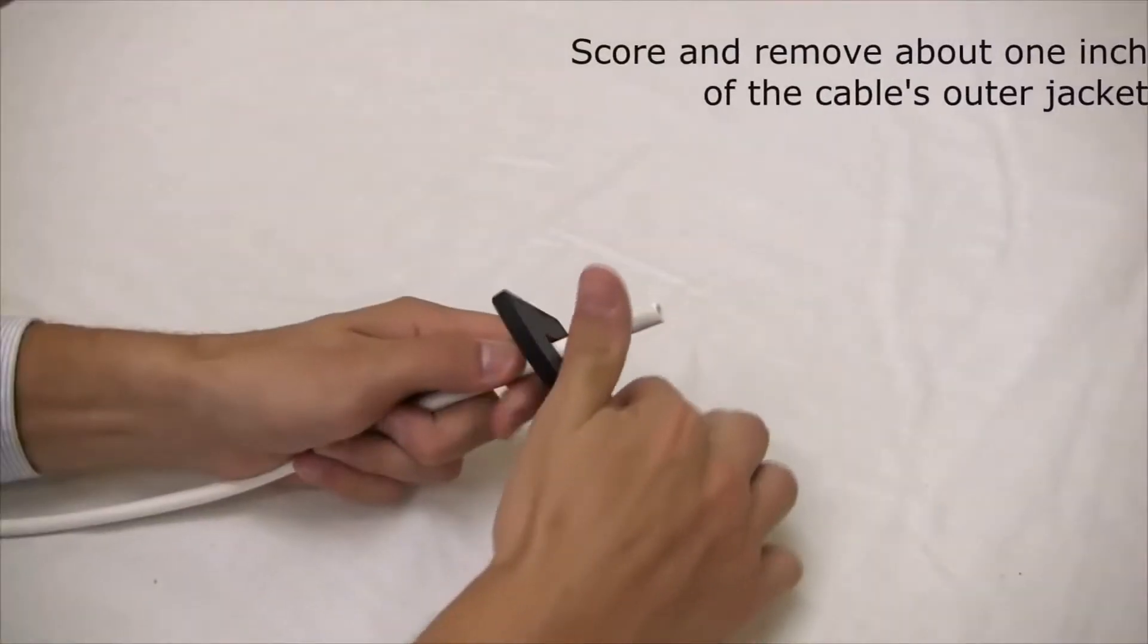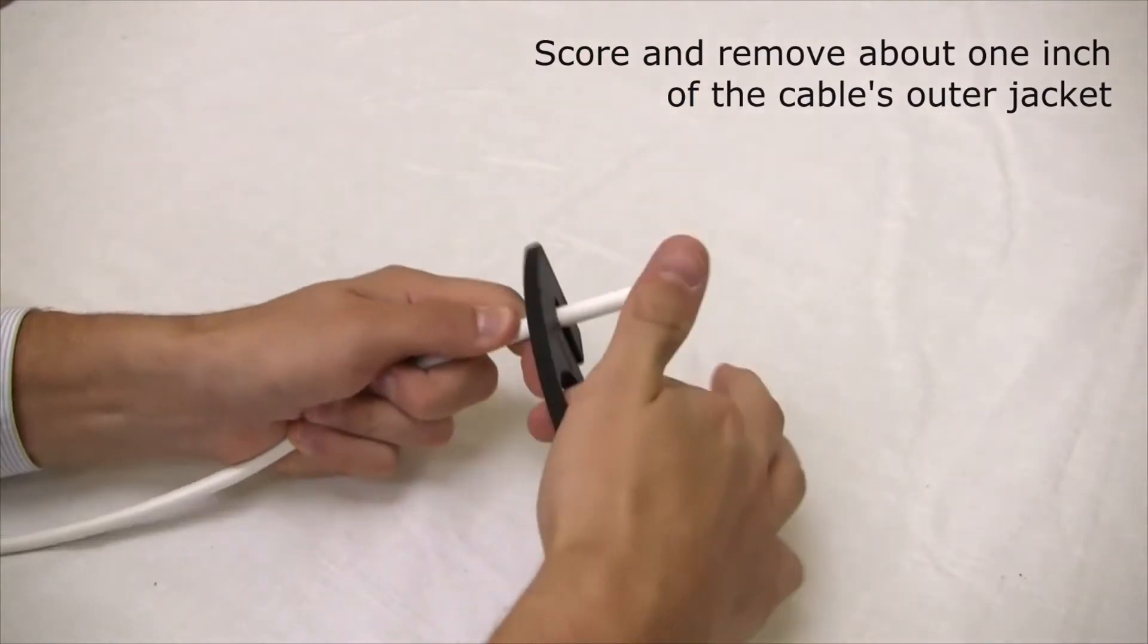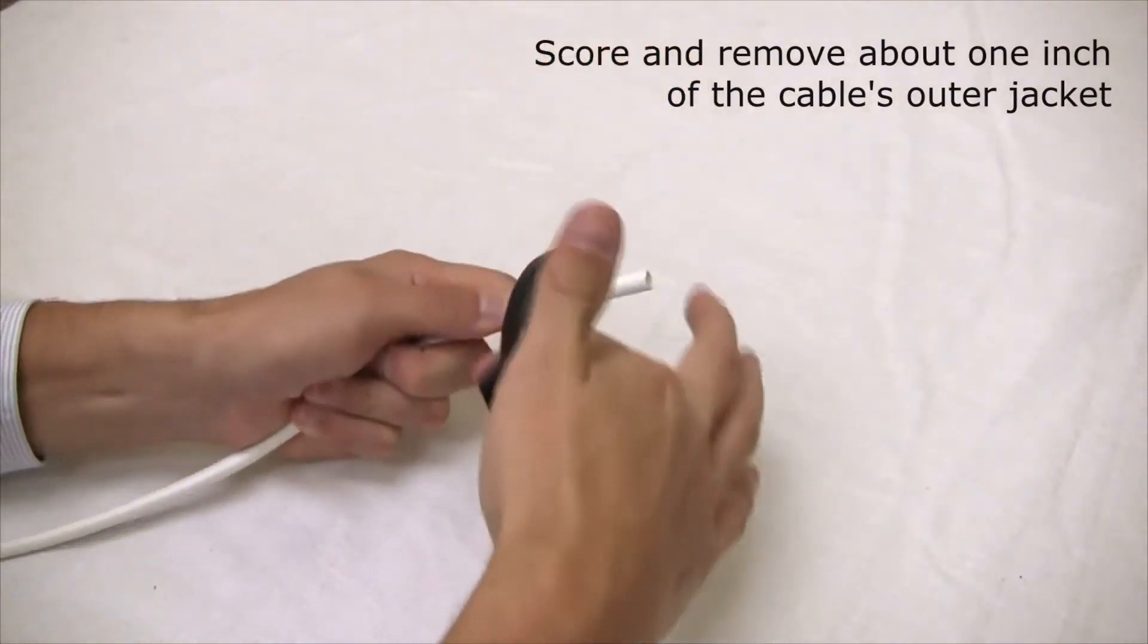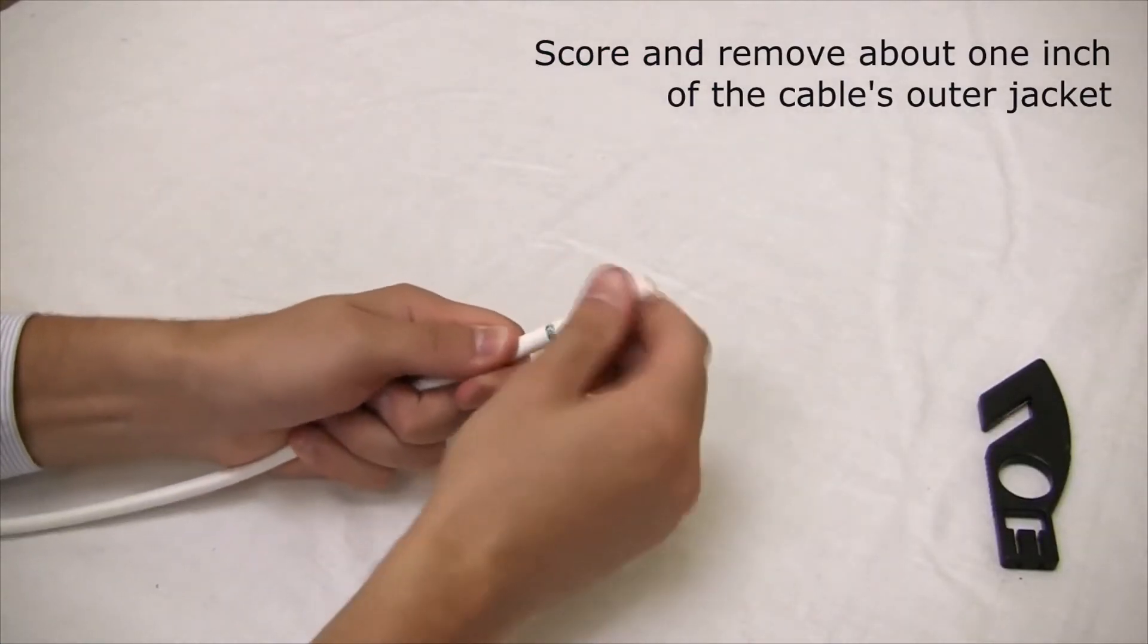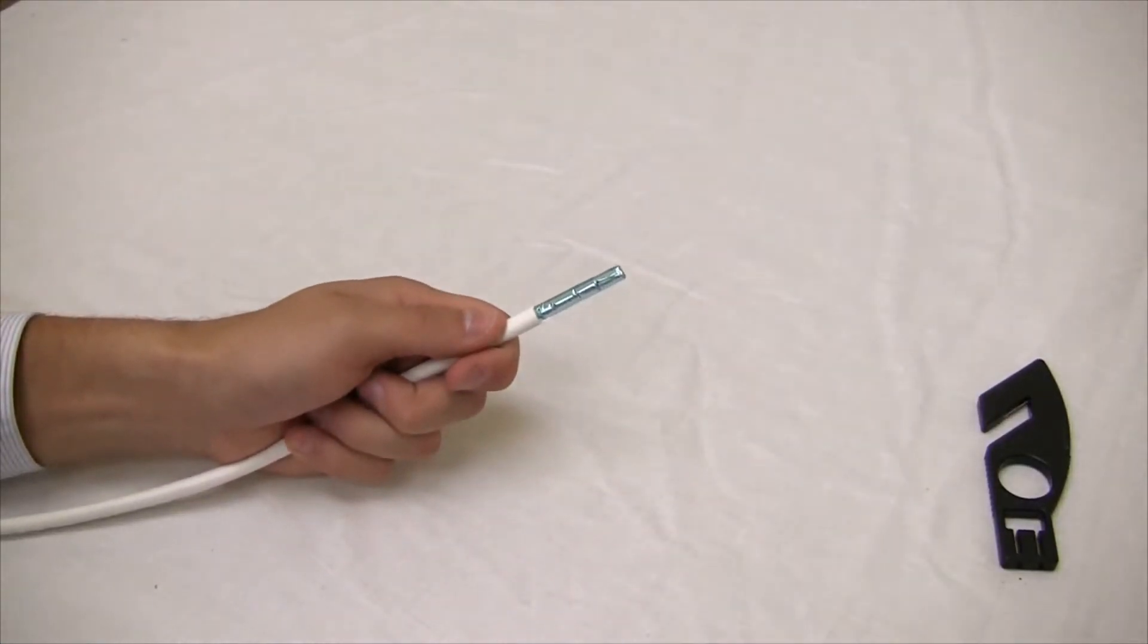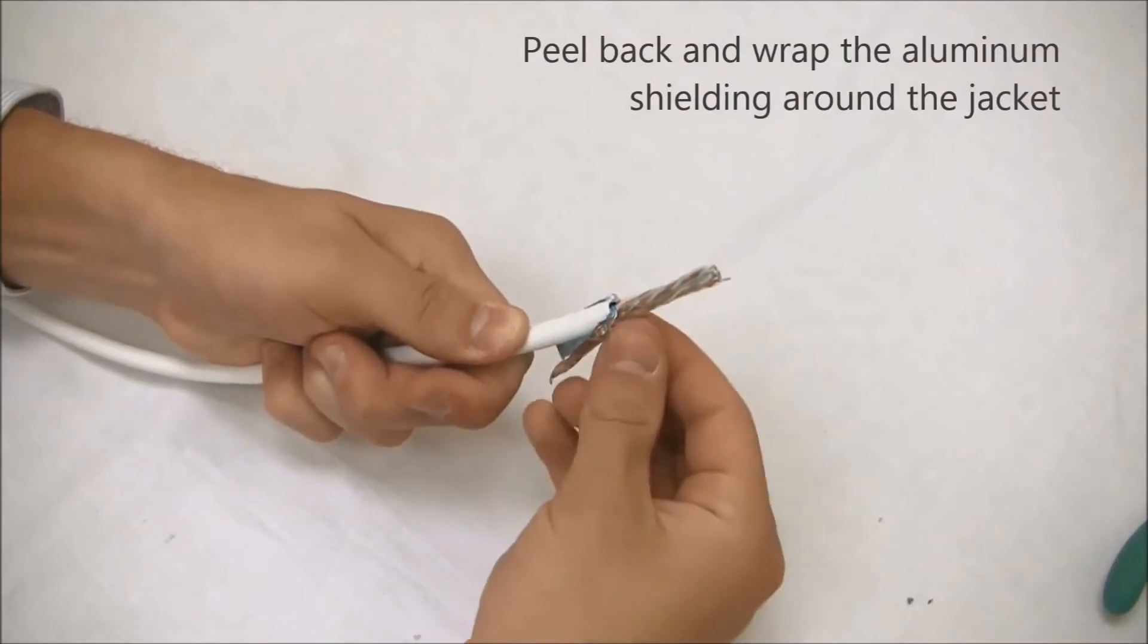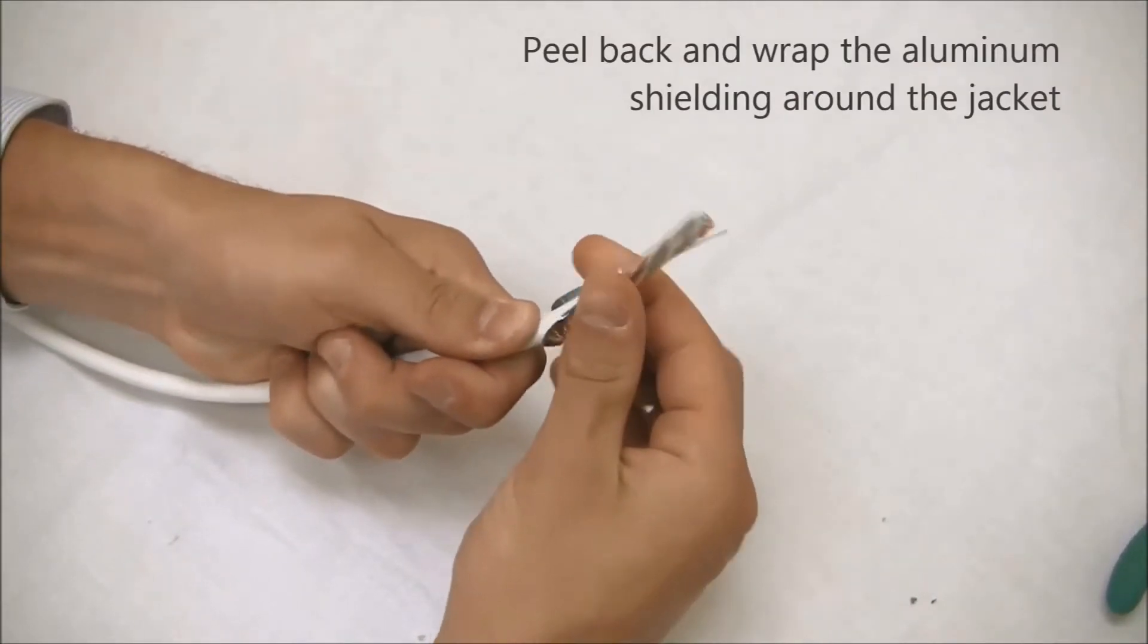Let's get started. The first step of the operation is to strip the cable by scoring the outer edge of the jacket about one inch from the end, making sure not to damage the inner shield. Once the portion of outer jacket is removed, carefully peel back the aluminum shielding and wrap it around the outer jacket.